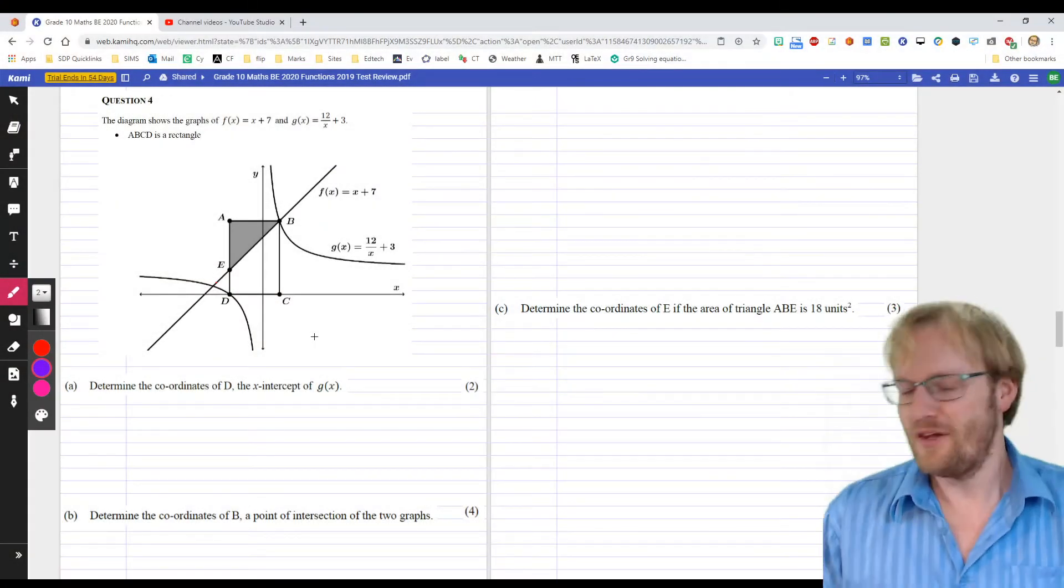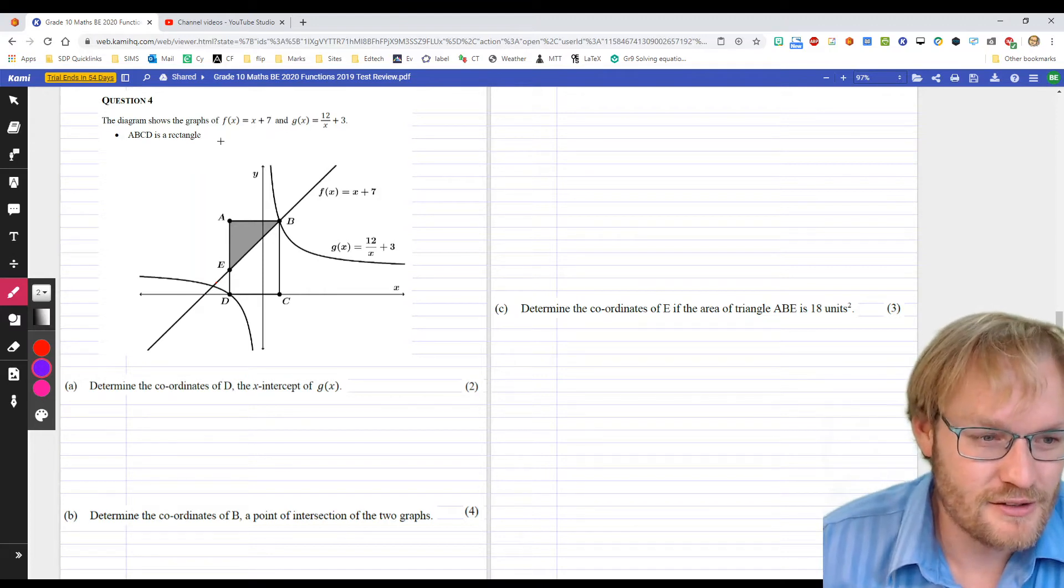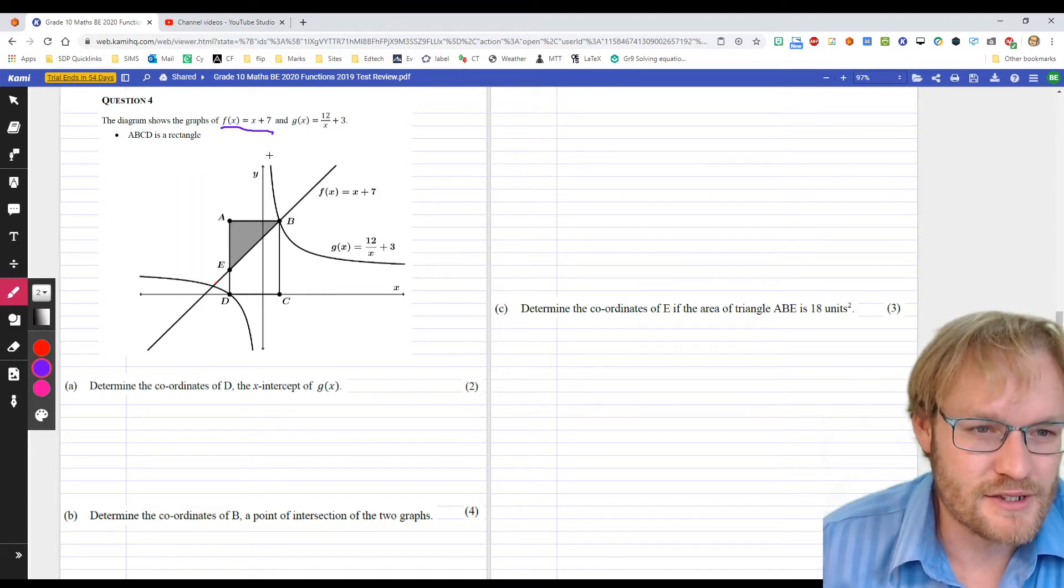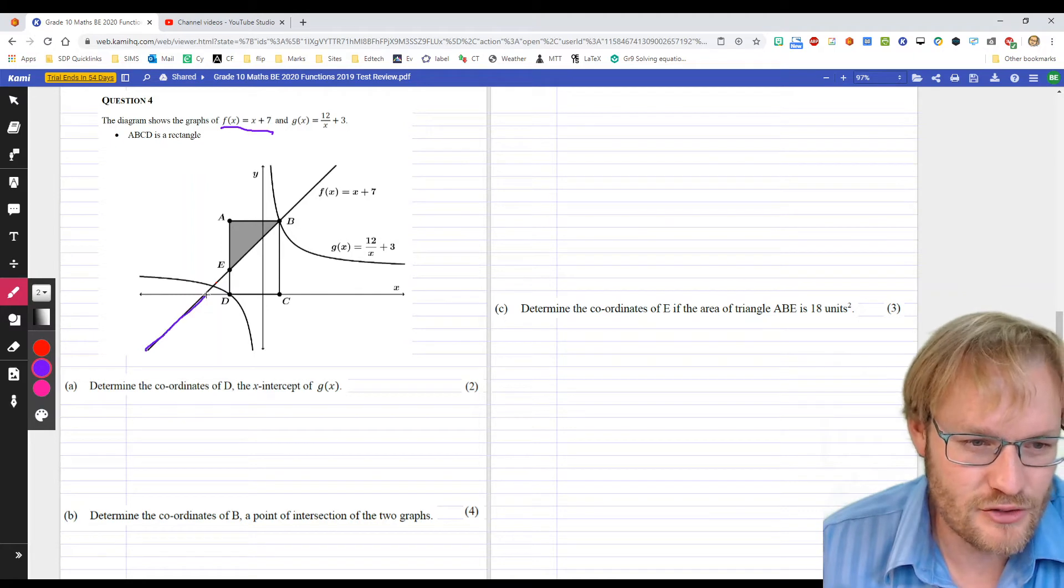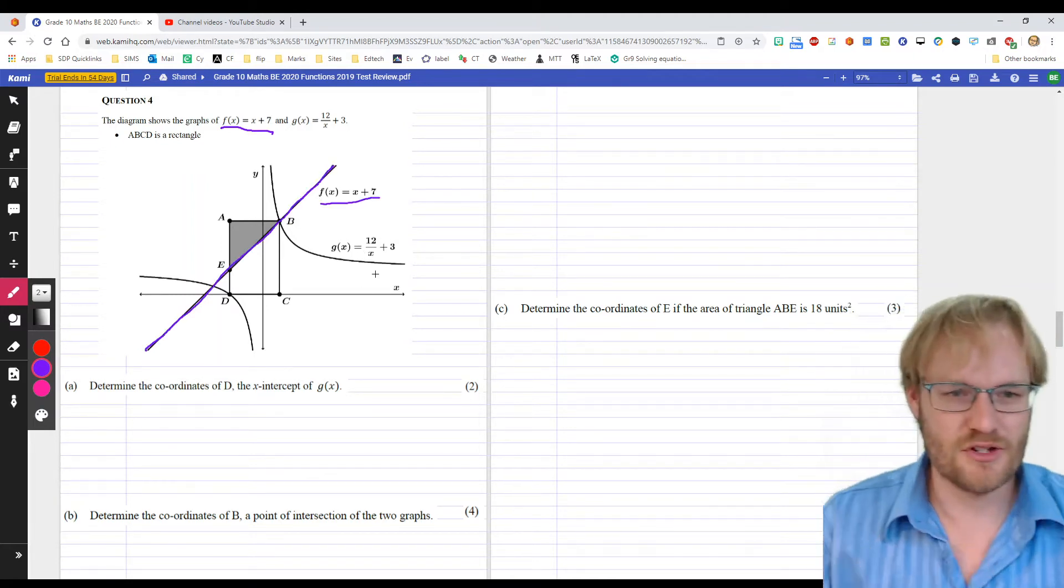Determine the coordinates of D, the X-intercept. Actually, I can't start with question A unless I actually know what's happening. So, let's look at our graph. Here we have this straight line, F of X equals X plus 7, that looks like a straight line, and they gave us the equation.